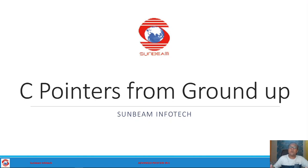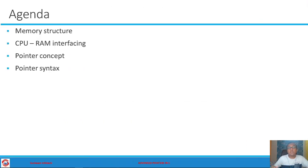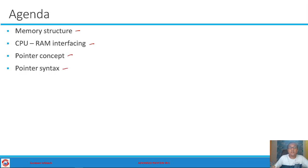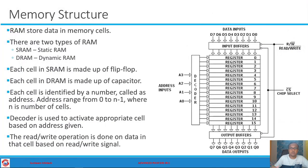In this session we will talk about C pointers. We will try to understand pointers from the hardware perspective all the way to the basic syntax of pointers. You must have heard that a pointer is a variable that stores the address of a memory location, but as a beginner the question that usually comes to mind is: what exactly do you mean by address, and what exactly do you mean by memory?